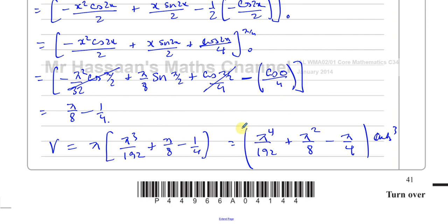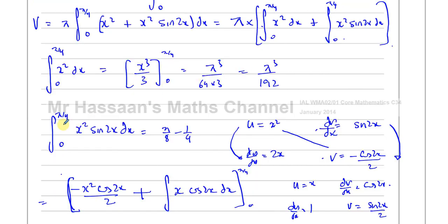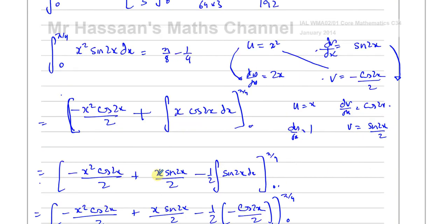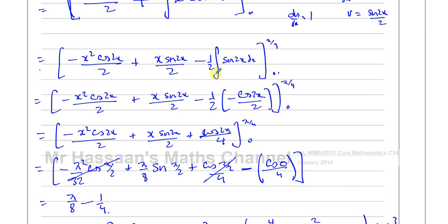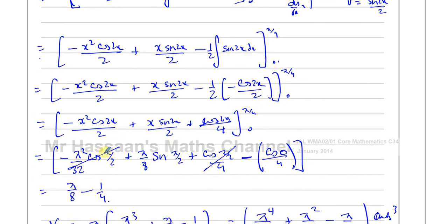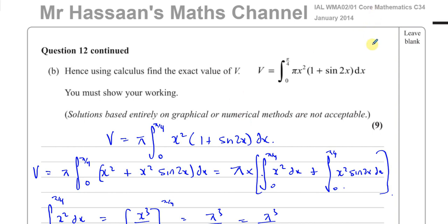That's the volume of revolution of this shape. It was a bit complicated with all the integration, but you just have to be logical. The integration by parts took a few steps, but many parts became 0 when substituting the limits — cosine of pi over 2 is 0, so things simplified nicely at the end. That's question number 12 from January 2014 C4. Click the links to see other questions from this paper or more on volumes of revolution and integration. Thank you for watching and see you soon.